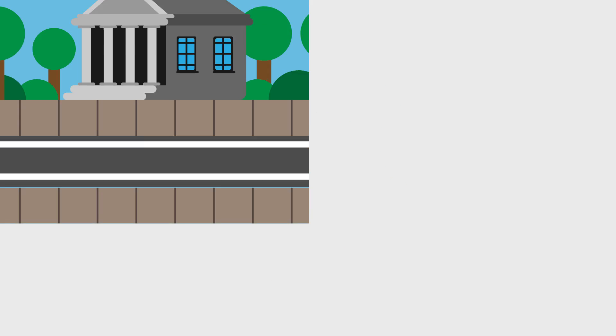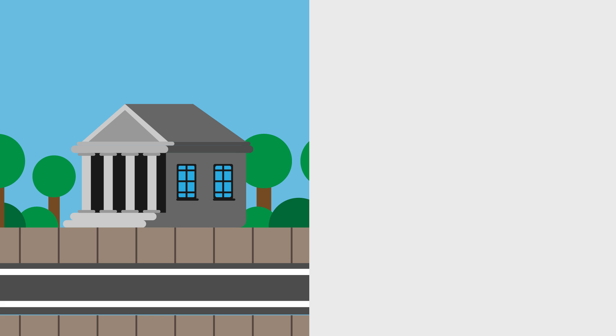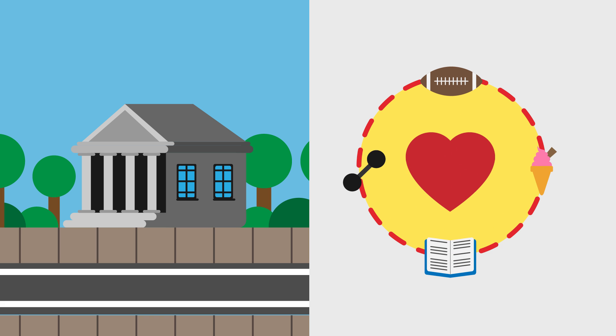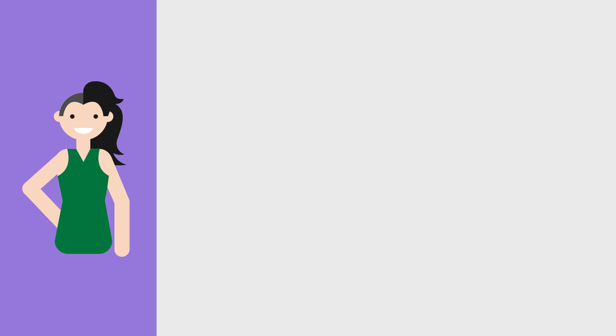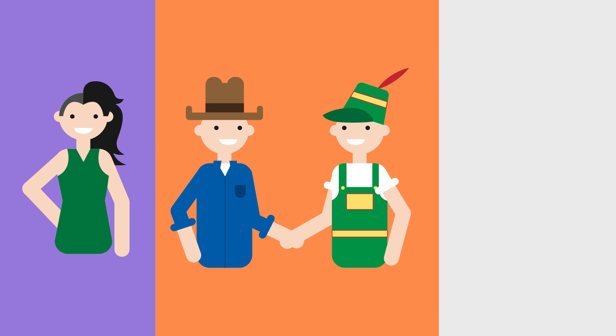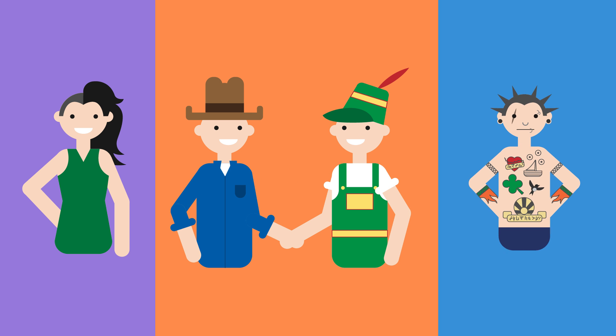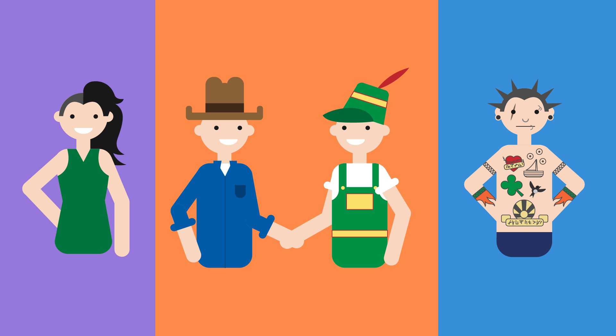Some variation is due to the environment or lifestyle of the organisms. Examples in humans are hair length — it depends on how short you decide to cut it — your accent, as this is linked to where you live, and if you have any piercings, tattoos or scars. These are characteristics that you acquire throughout your life.